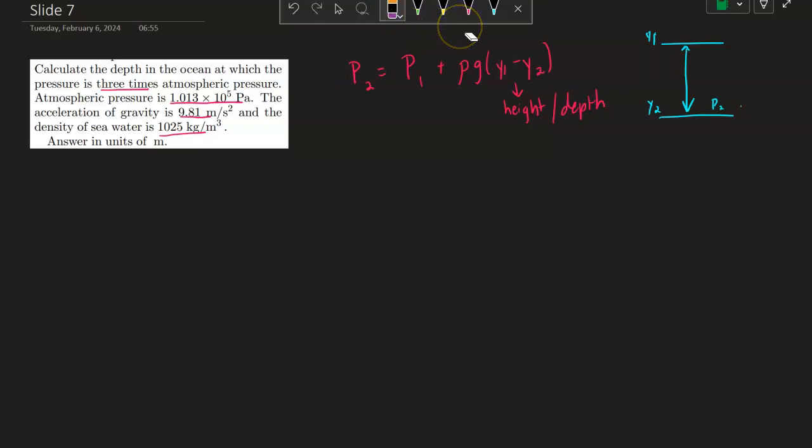We're looking for just the depth. Okay, straightforward. It says treat P2 as 3 times the normal atmospheric pressure. So this will just be 3 times P1, or whatever number, equals P1 plus rho g h. We're going to get this height, or depth.